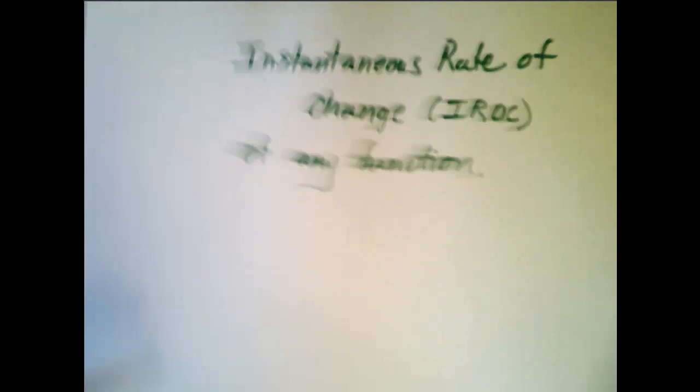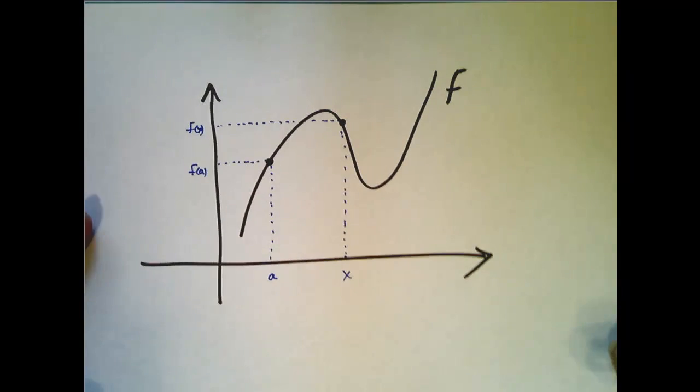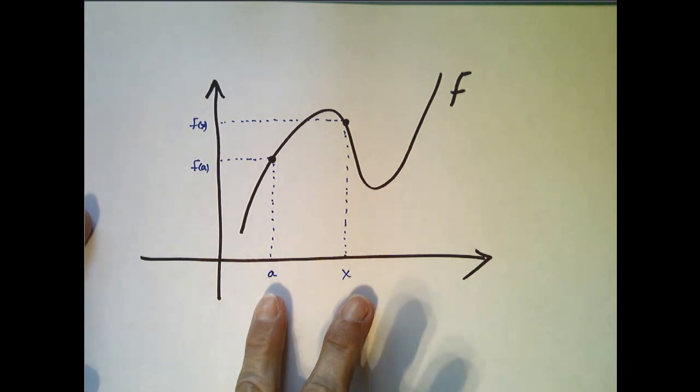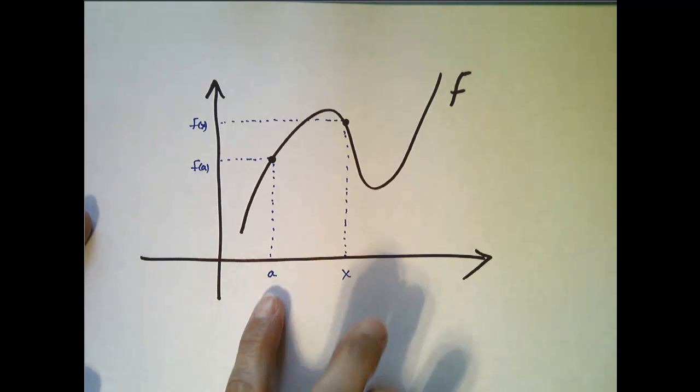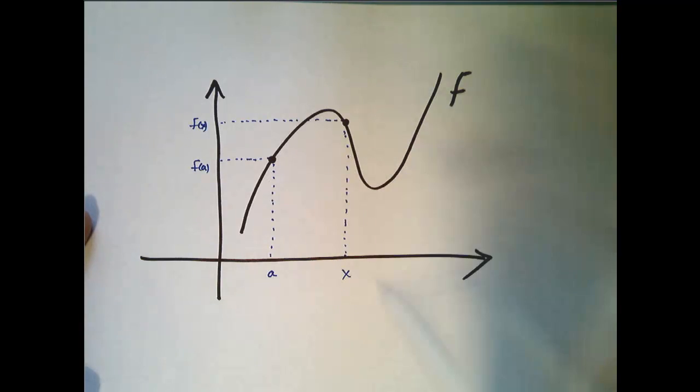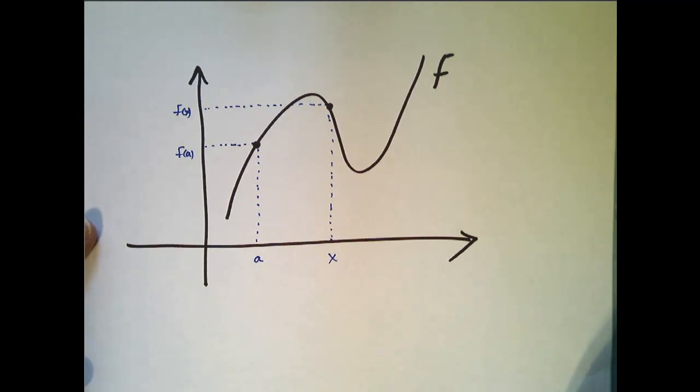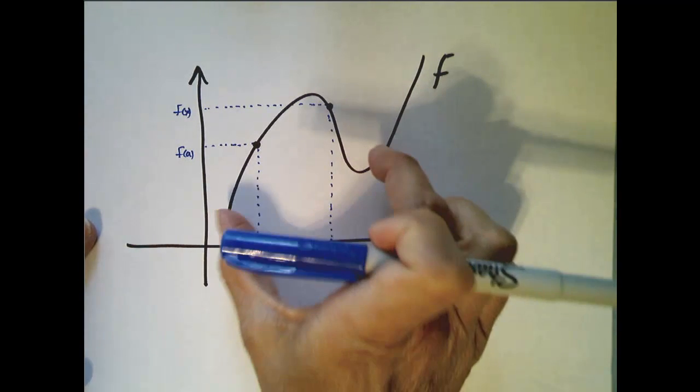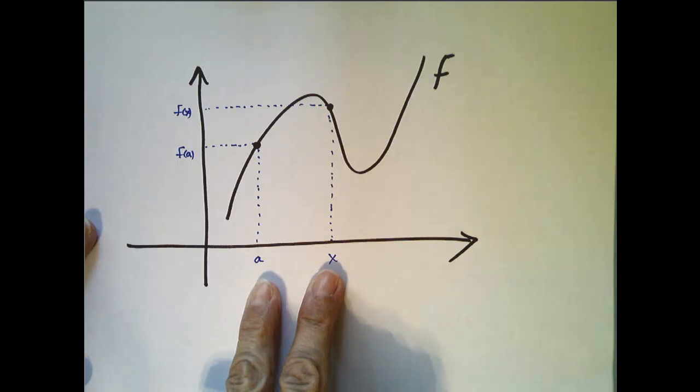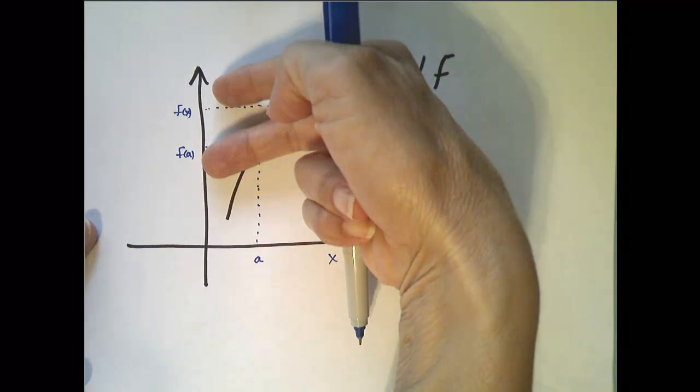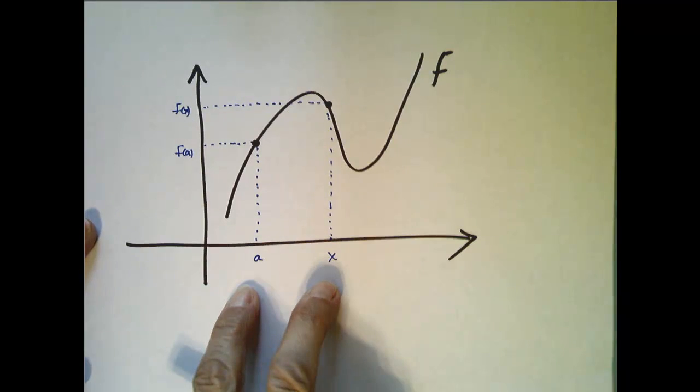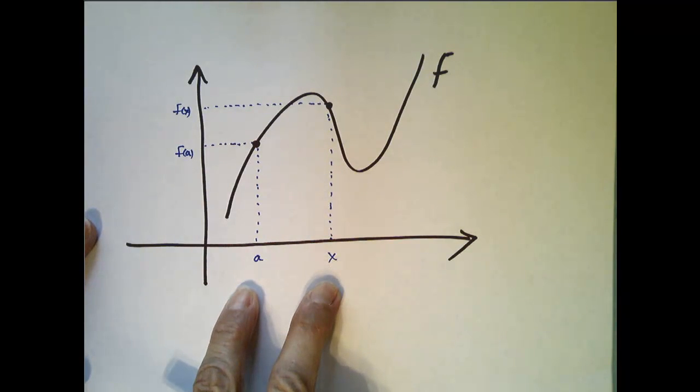So let's start with an arbitrary graph of f, and I have plotted two points on this graph, (a, f(a)) and (x, f(x)). Just like before, if I wanted to find the average rate of change of this function on this interval, it would be the change in the function values divided by the change in the x values, or the